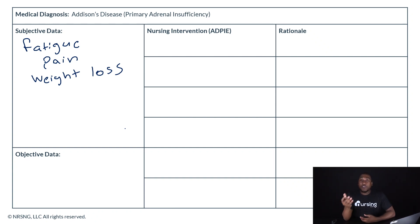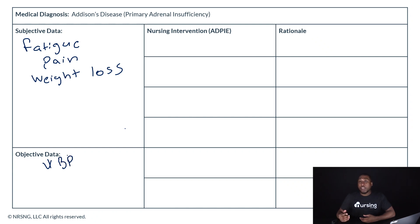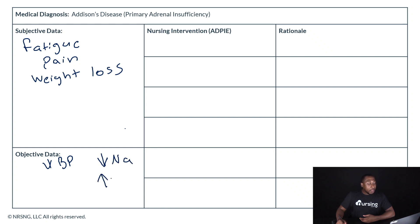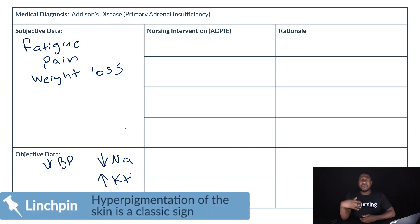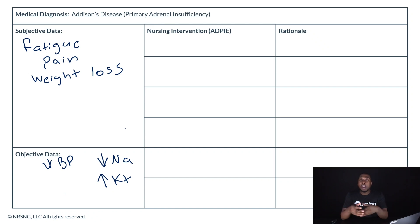When you observe these patients, some of the objective findings you're going to notice on their vital signs: they are going to have low BP, decreased blood pressure. Their electrolytes are going to be way out — you may see hyponatremia, so low sodium, or hyperkalemia, high potassium. They're also going to have severe vomiting and diarrhea, losing electrolytes that way, as well as dehydration and possibly some loss of consciousness.